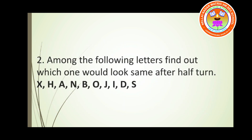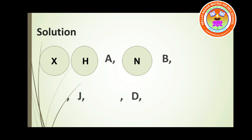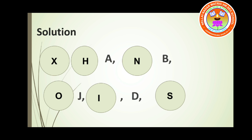Now the answer: among the following letters, find which ones look the same after half turn. The alphabets A, B, J, and D won't look the same when rotated to half turn. But the alphabets X, H, N, O, I, and S will look the same when rotated to half turn. When these letters rotate to half turn, they look exactly the same as they are.